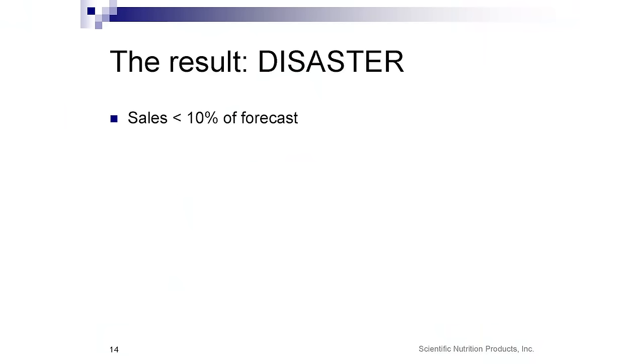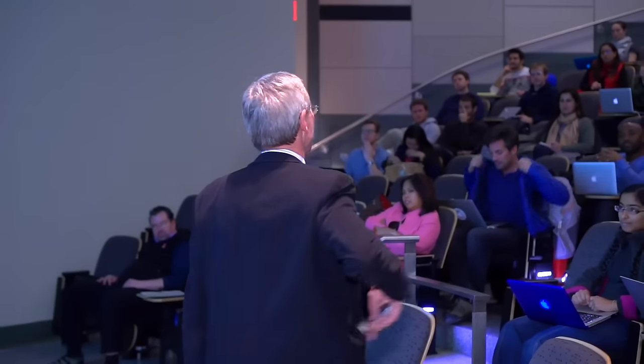That was a complete disaster. Just an absolute failure. Revenues came in at less than 10% of what we forecasted. And to make matters worse, once a month we'd meet as the senior management team to go over how our business was doing. I'd have to stand up in front of my peers and say: our forecast for this month was $400,000 and we came in at $32,000. So what did I do wrong?